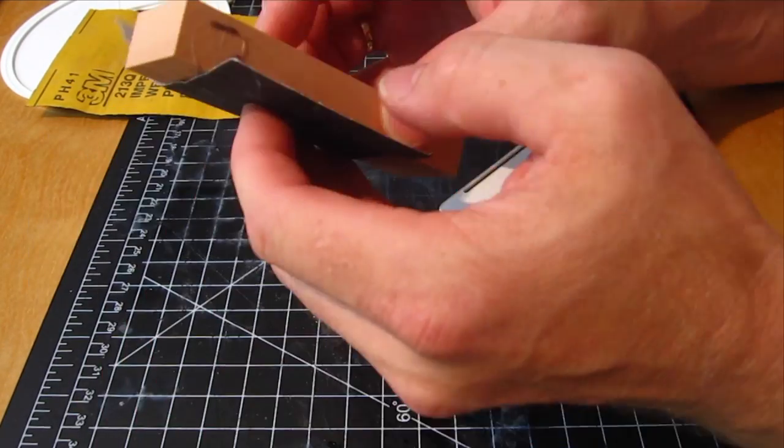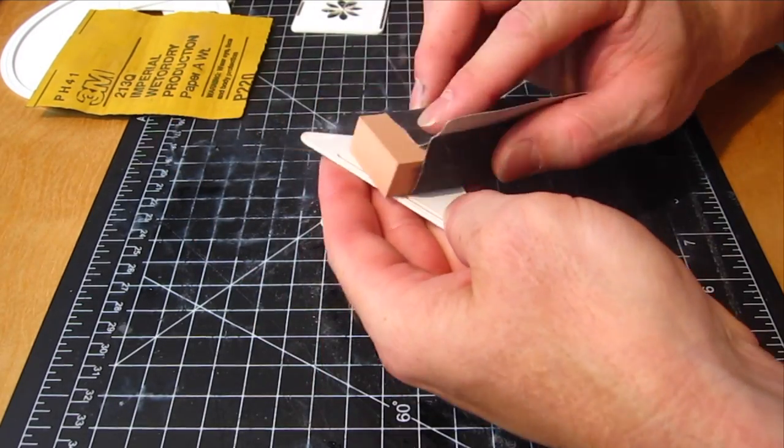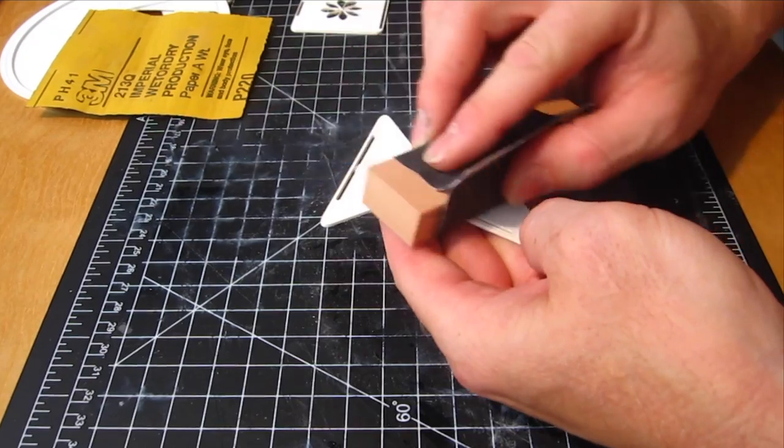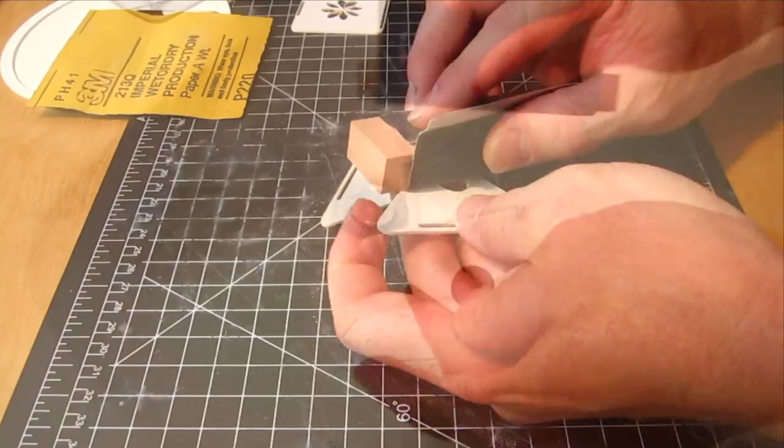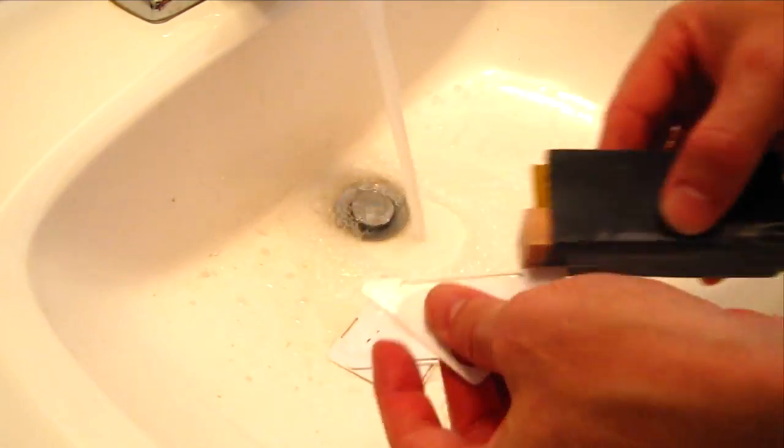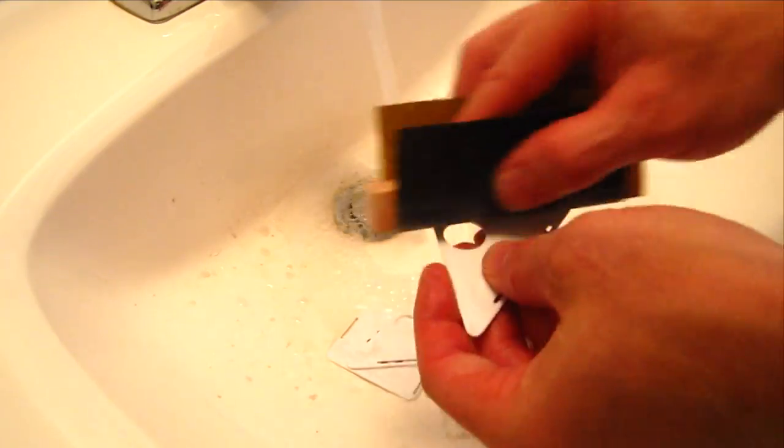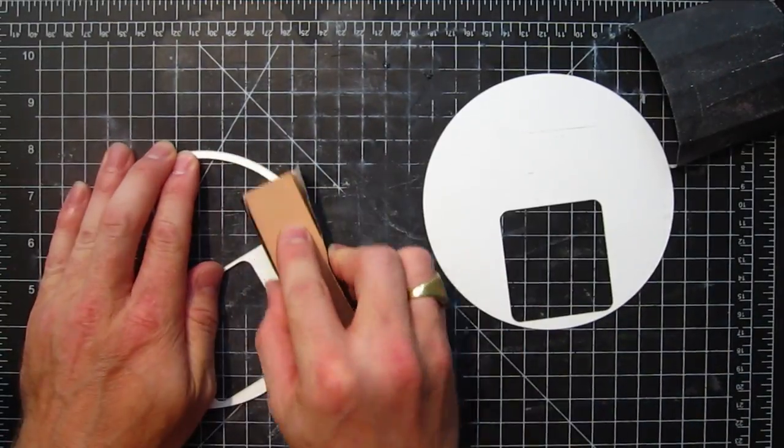Here's some 220 grit, but I'm going to start with 180 and I'm using a sanding block. I can't stress this enough, always use a sanding block when you're sanding. Doesn't matter if it's a car, a model, whatever. You want to get a good surface, use a sanding block. Don't use your fingers. Your fingers are soft and formable. A sanding block is not. So whether you're sanding a curved or a flat surface, always use a sanding block.